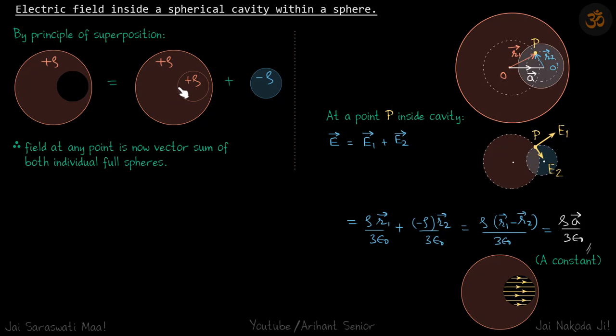So in case of cavity, let's take a point P inside the cavity. By principle of superposition, field will be due to the bigger sphere and due to the smaller sphere. Now this P point lies inside both the spheres, so we are only going to consider this region.